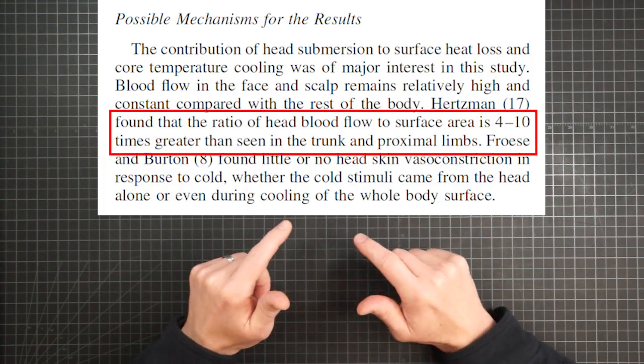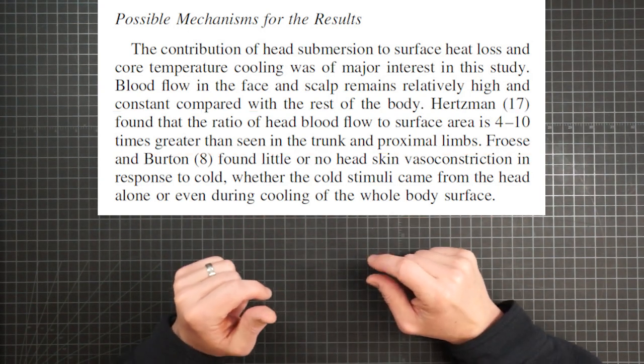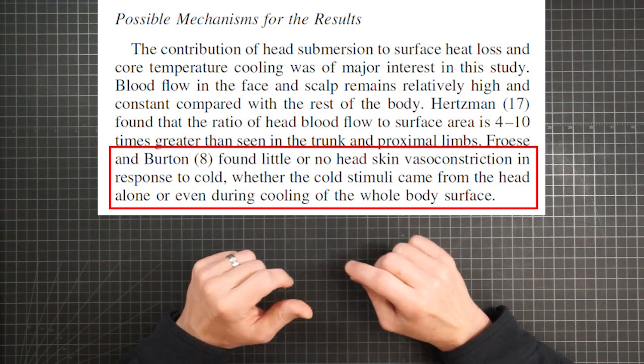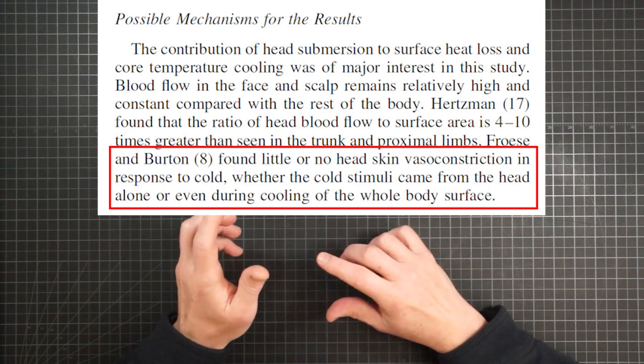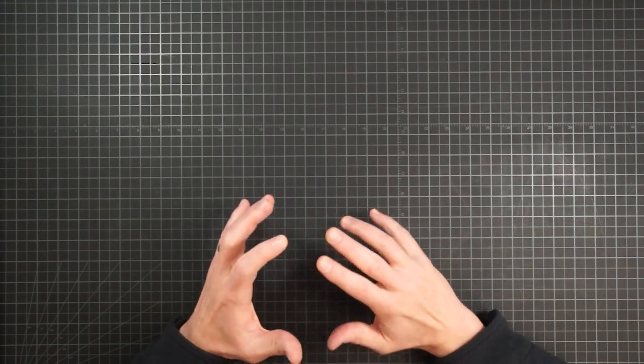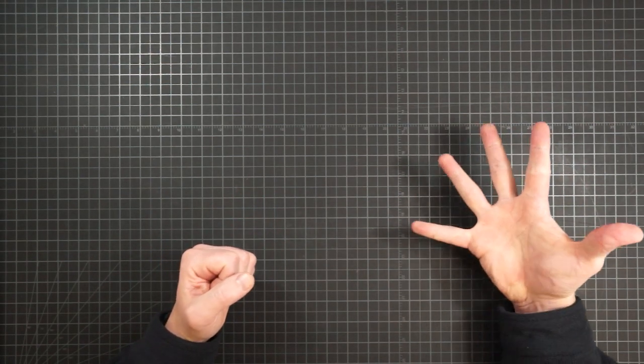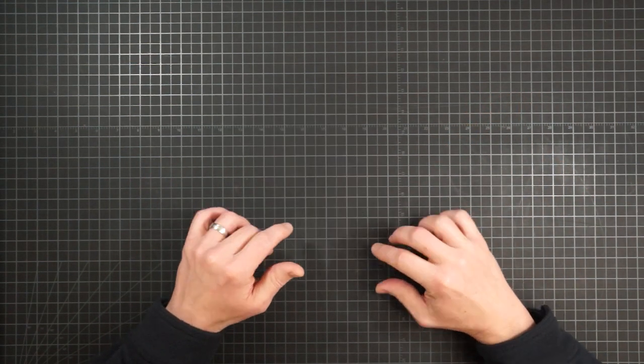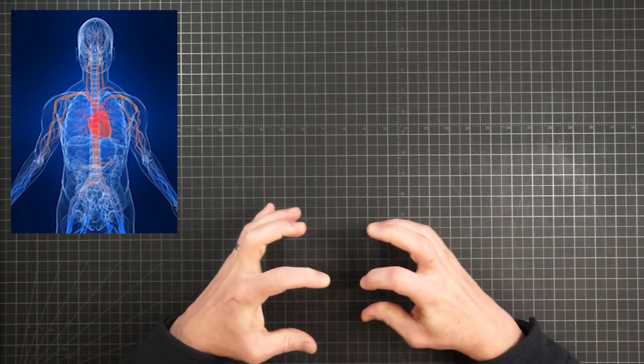First, the ratio of head blood flow to surface area is 4 to 10 times greater than seen in the trunk and proximal limbs. So there is disproportionately large amount of blood flowing through your noggin. And second, there is little or no head skin vasoconstriction in response to cold, whether the cold stimuli came from the head alone or even during cooling of the whole body surface. You see, vasoconstriction is a defense response designed to protect your body's core from the cold. So things like your fingers and toes can act like cooling fins, as can your arms and legs themselves. So when things get chilly, your arteries and veins act to withdraw much of their blood from these regions of thermodynamic liability. That way, you are not pumping too much warm blood out to the edges where it will just get rapidly cooled off and then brought back to chill your core.